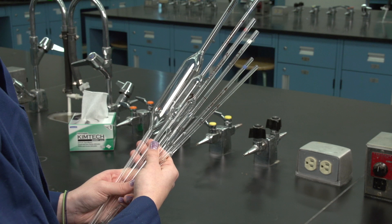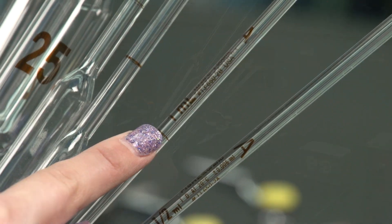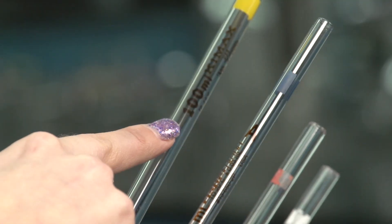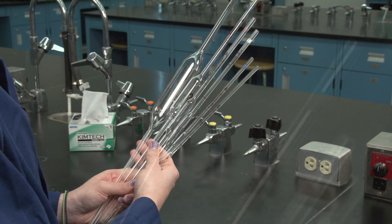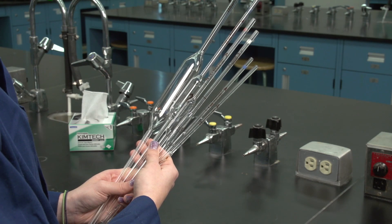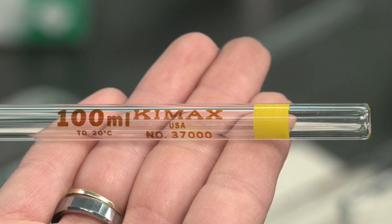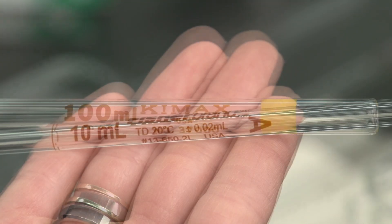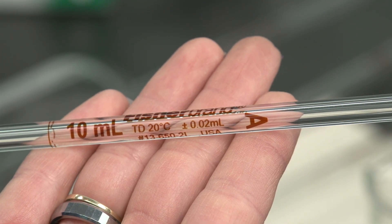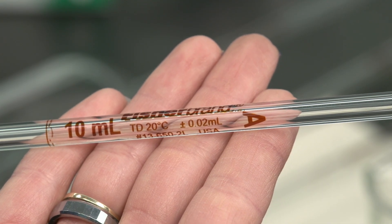Volumetric pipettes are glass or plastic tubes, usually between 1 and 100 milliliters. Used for accurate measurements, volumetric pipettes are calibrated to deliver only one specific volume. The specifications of a volumetric pipette are usually imprinted on the pipette itself.